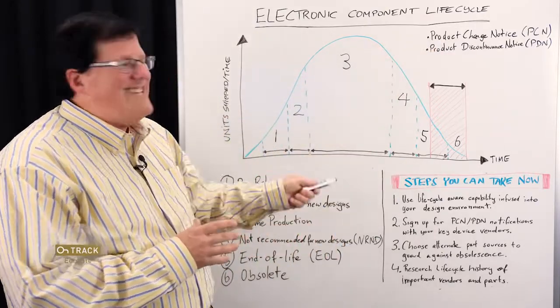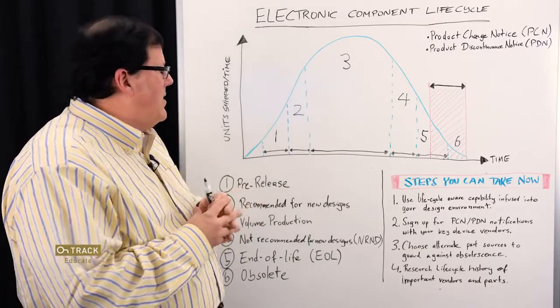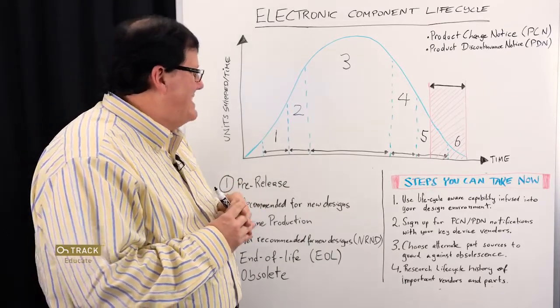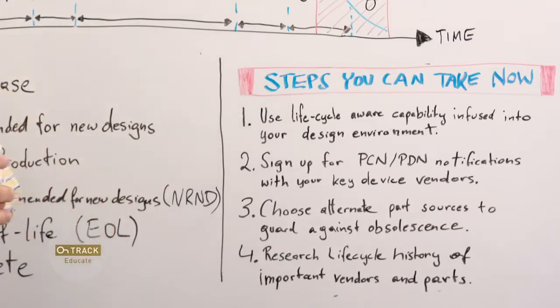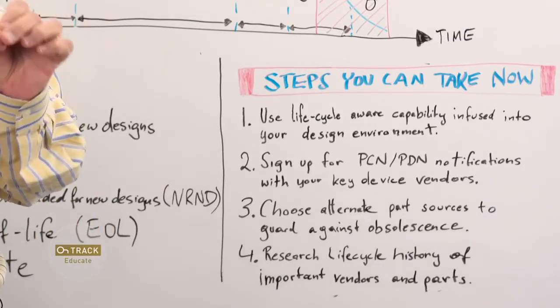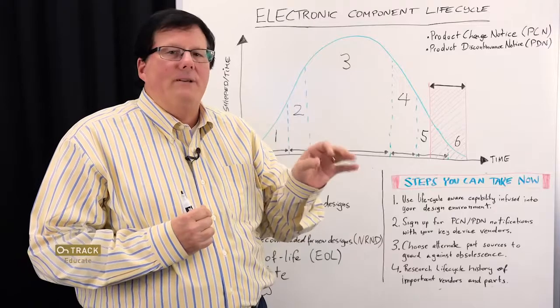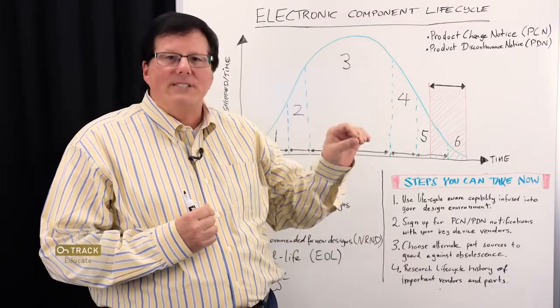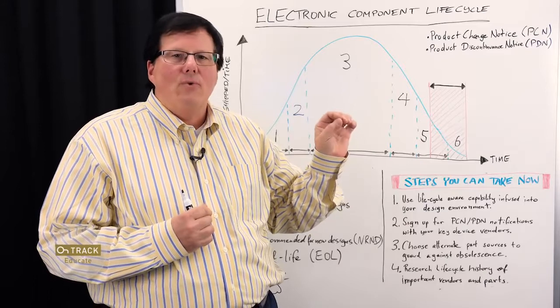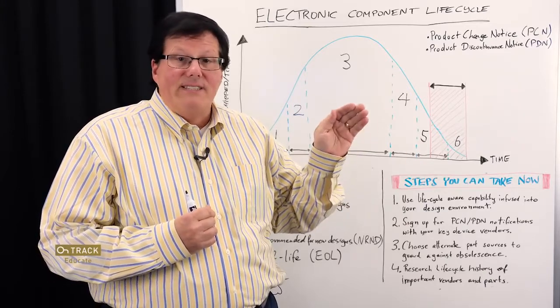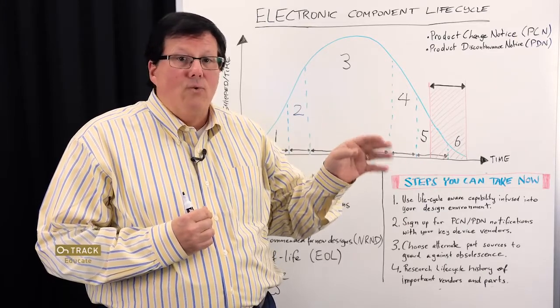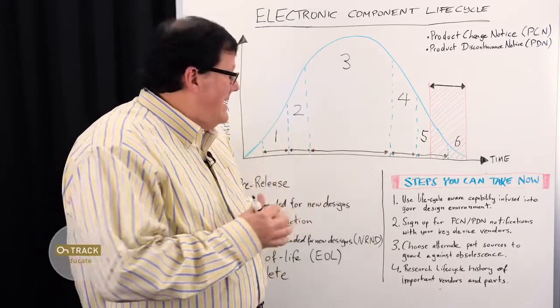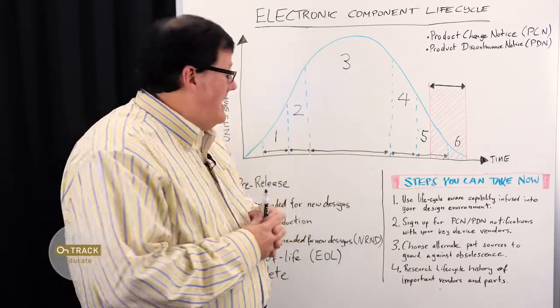So what can you do today to help yourself deal with component obsolescence. One is you can use life cycle aware capability that's infused into your design environment. Wouldn't it be really nice if when you're selecting a part you can see right then and there whether this is end of life, whether it's good to go, where it is in its life cycle. And there are tools out there that offer that capability.